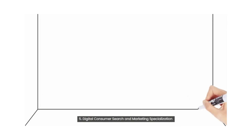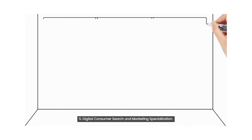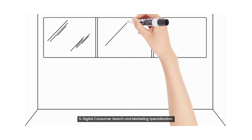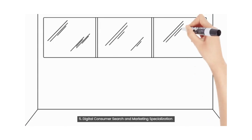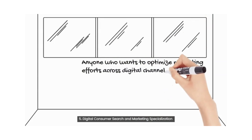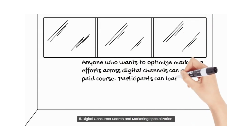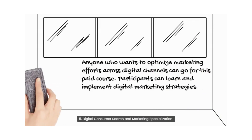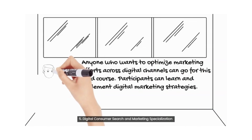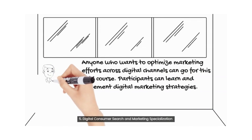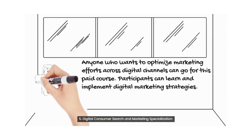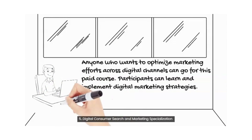Fifth course: Digital Consumer Search and Marketing Specialization. Anyone who wants to optimize marketing efforts across digital channels can go for this paid course. You should learn this course because it gives all the details from basics to advance for pay-per-click. You can use this to enhance your business with advertising. This course is for beginner level — anyone who wants to learn about PPC Marketing, Digital Marketing Agencies, Website Owners, and Advertising Agencies.